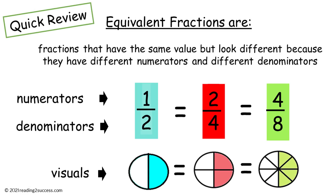Before kids start the activities, do a quick review with them. Remind them that equivalent fractions are fractions that have the same value but look different because they have different numerators and different denominators. Remind them that the numerators are on the top and show a part of the fraction, and the denominators are on the bottom showing the whole of the fraction. For example, one-half equals two-fourths equals four-eighths — they are equivalent fractions.